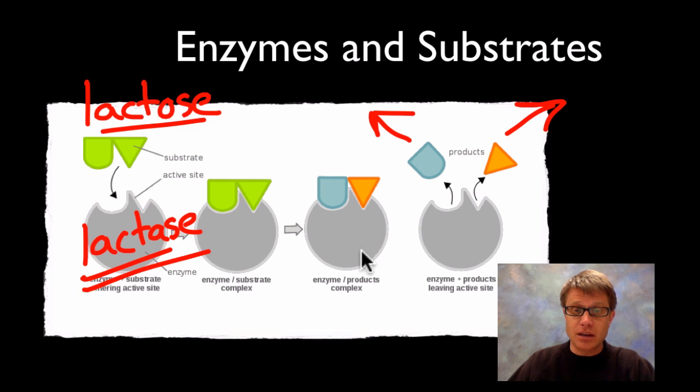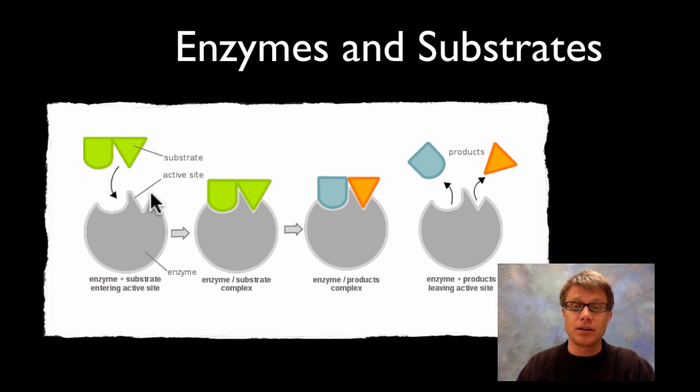And so if you look at the enzyme itself, the lactase, it's never changing its shape. It's just receiving a substrate we call that, or a molecule that fits into an enzyme. It breaks it apart and then it waits for another one over and over and over again. And for things like lactase this can happen millions of times a second. So it goes really quickly.